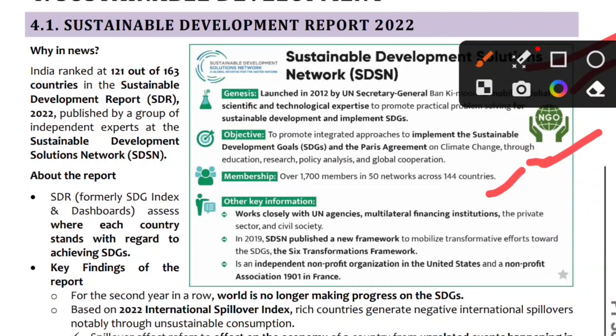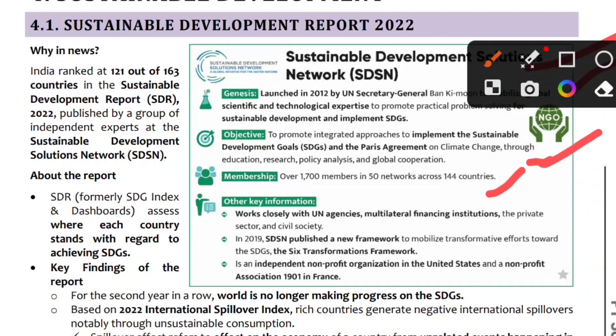Key information: United Nations agencies, multilateral financing institutions, the private sector, and civil society are closely involved. The SDGs use a new framework released in 2019, called the Six Transformations Framework. The main objective is to implement the SDGs.